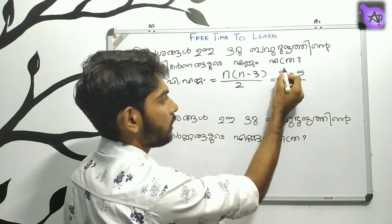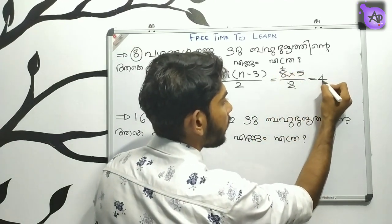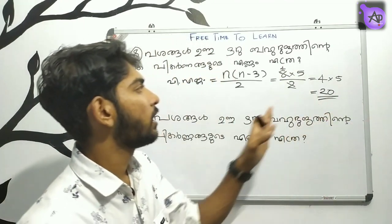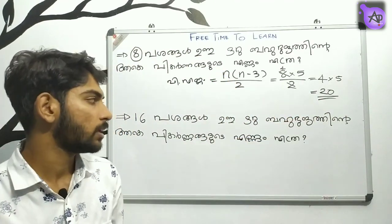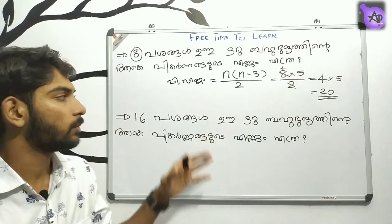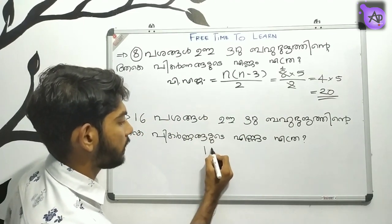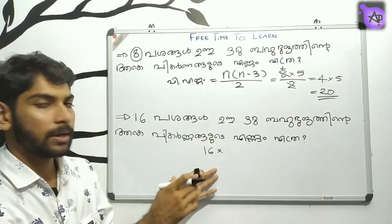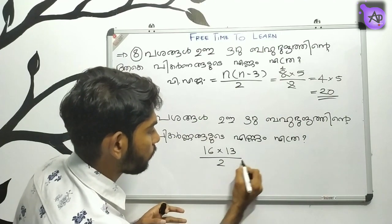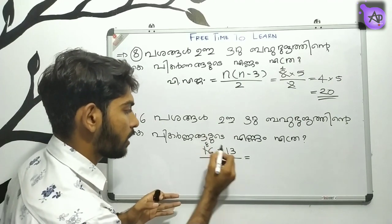So we add these and calculate. The answer comes from 4 into 5. Now, n here is 14. n is equal to 14. 14 into (n minus 3): 14 minus 3 is 13. n minus 3 is 13, divided by 2. So the number of diagonals is 14 into 13 divided by 2.